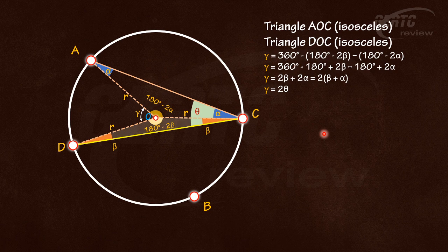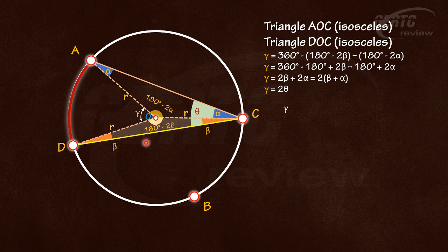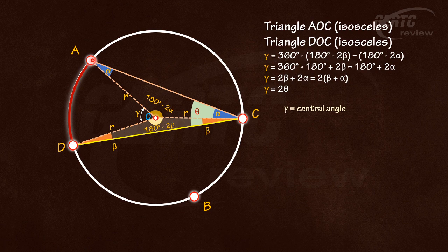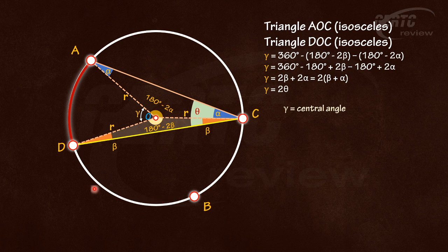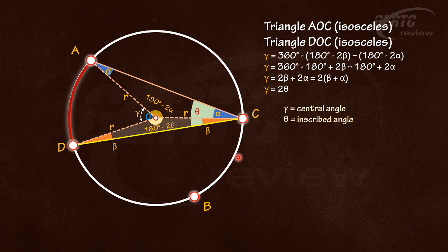So this is the theorem: if you have an arc, the angle of that arc from the center of the circle is called the central angle, that is gamma. The angle subtended by that arc from the circumference of the circle anywhere on this white arc is called the inscribed angle. The principle is the central angle is always double the inscribed angle.